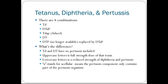What's the difference? Td and Dt have no pertussis included. Uppercase letters indicate the full-strength dose of the toxins, so the D, T, and P in DTaP are full-strength doses. In Tdap, the D and P have lesser doses than the T. Lowercase letters indicate a reduced strength of diphtheria or pertussis. The 'a' in DTaP stands for acellular, meaning the pertussis component only contains part of the pertussis organism.